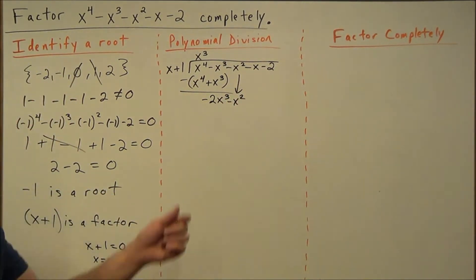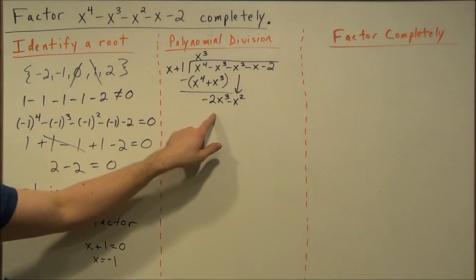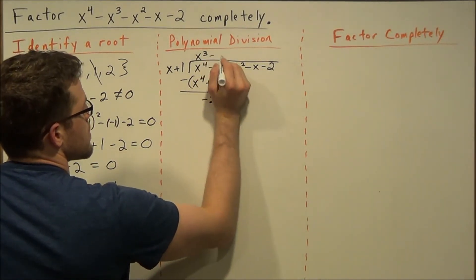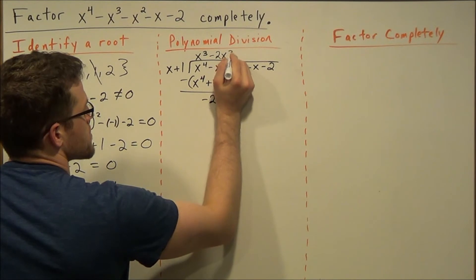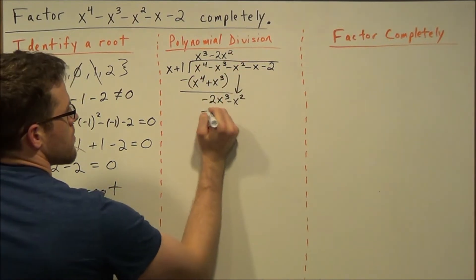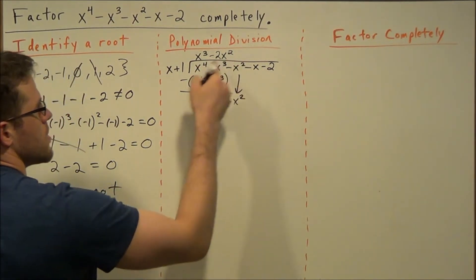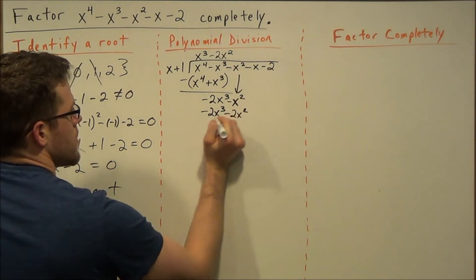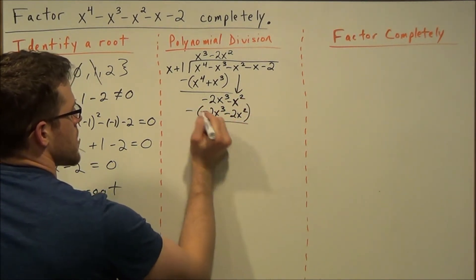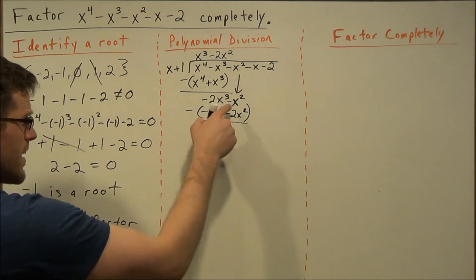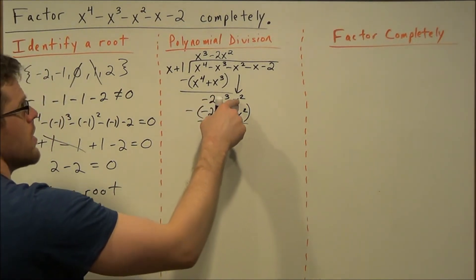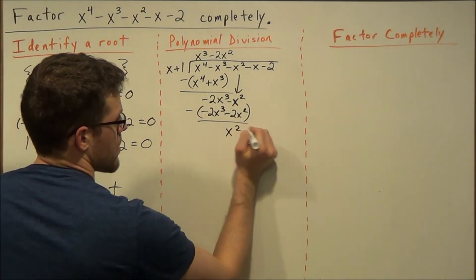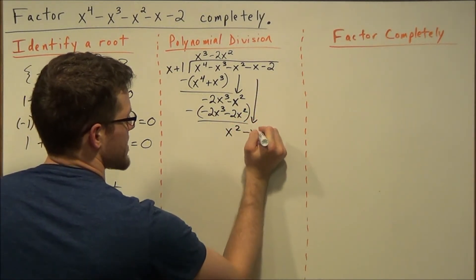And we repeat this process until there's nothing left. So x goes into negative 2x to the third, it goes in minus 2x squared times. And now we distribute: minus 2x to the third and we have minus 2x squared. So we subtract this line from the previous.